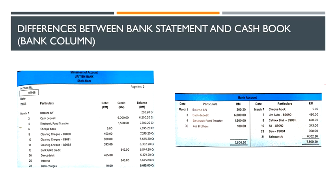Now I'll show the first sub-step. Debit for bank statement is negative, so debit is positive and credit is negative. Negative with negative: RM5 matches, RM450 matches, RM600 matches, RM343 matches — so some don't match. Then positive with positive: RM6,000 matches, RM1,500 matches — some don't match. The balance carried down on credit side is there. That completes the first sub-step, and then you look at the additional information.